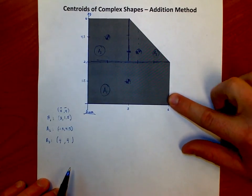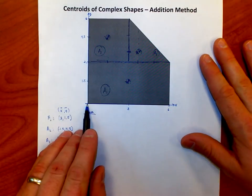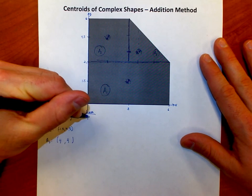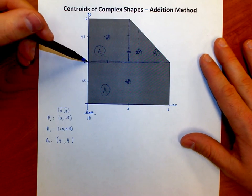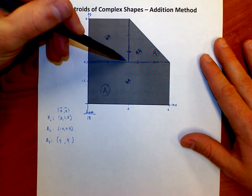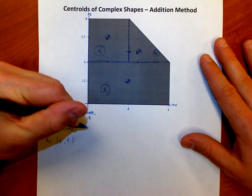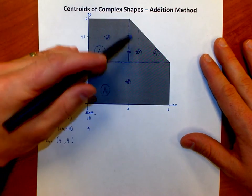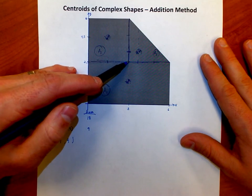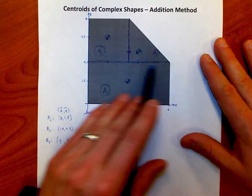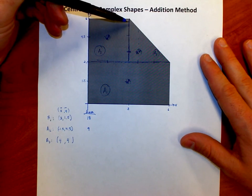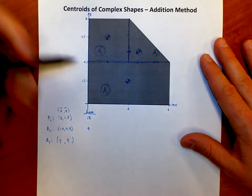This is a rectangle. The area of the rectangle is base times height, which is six times three, which is 18. This is a square. It's a three by three square. The area of that shape is nine. And then this is a triangle. For triangles, it's one half base times height. It's a three by three triangle. Three times three is nine, and half of that is 4.5.